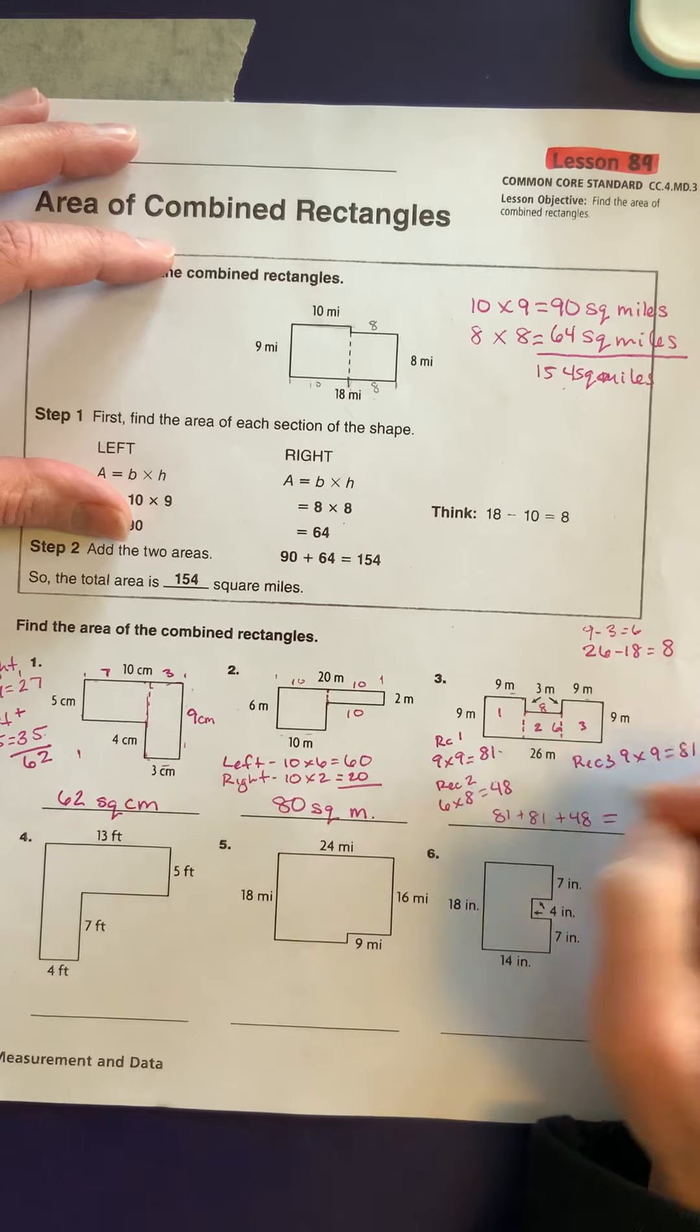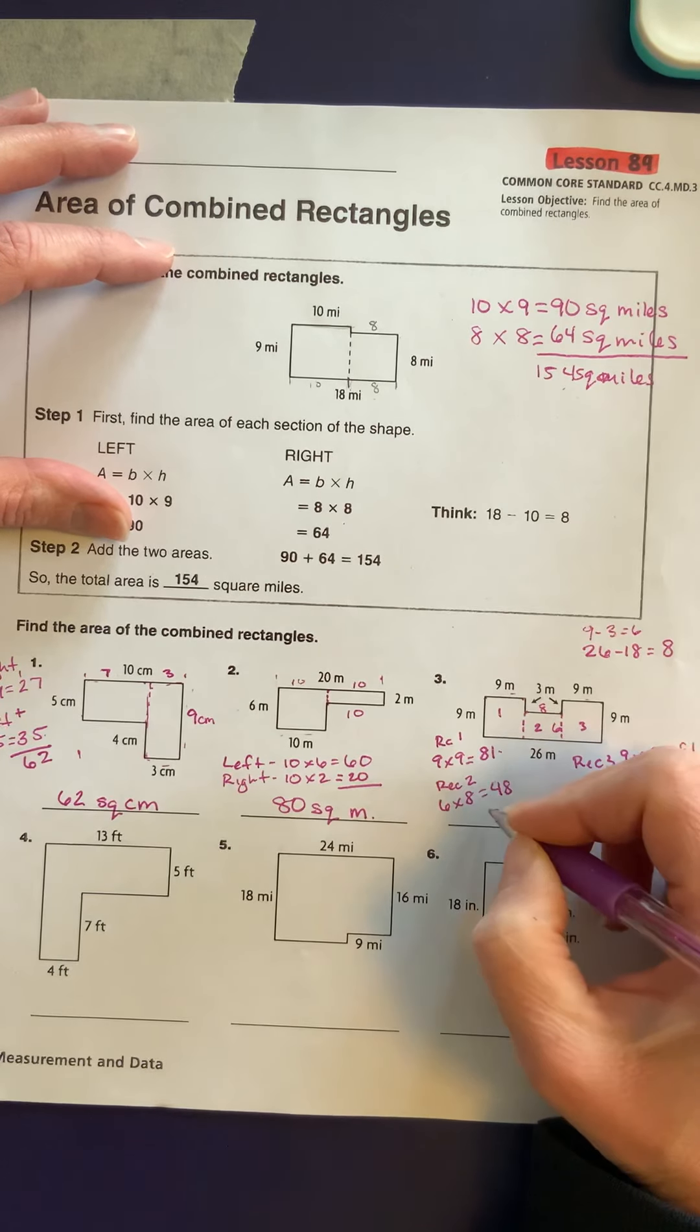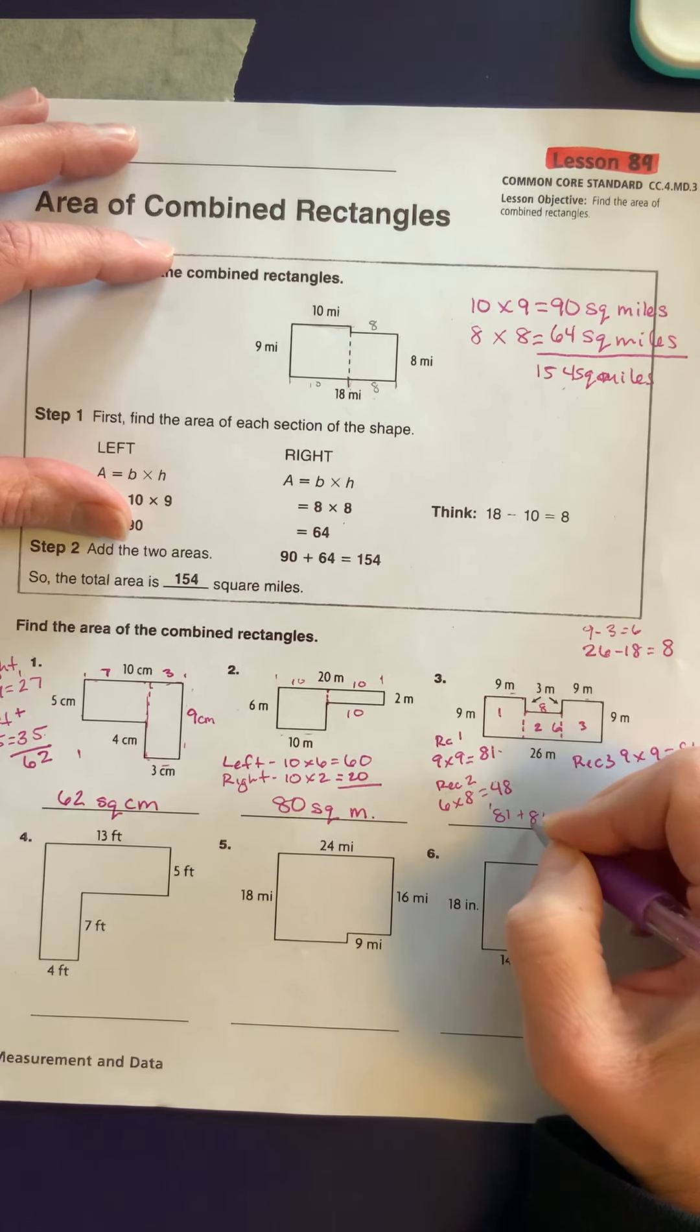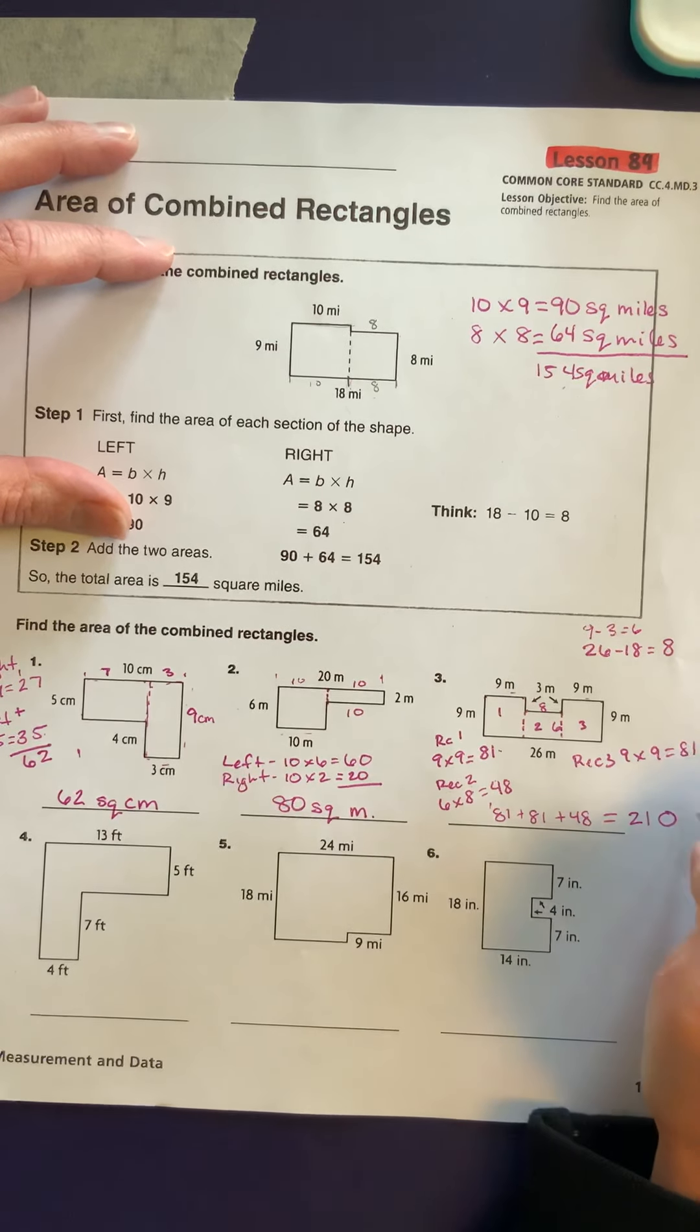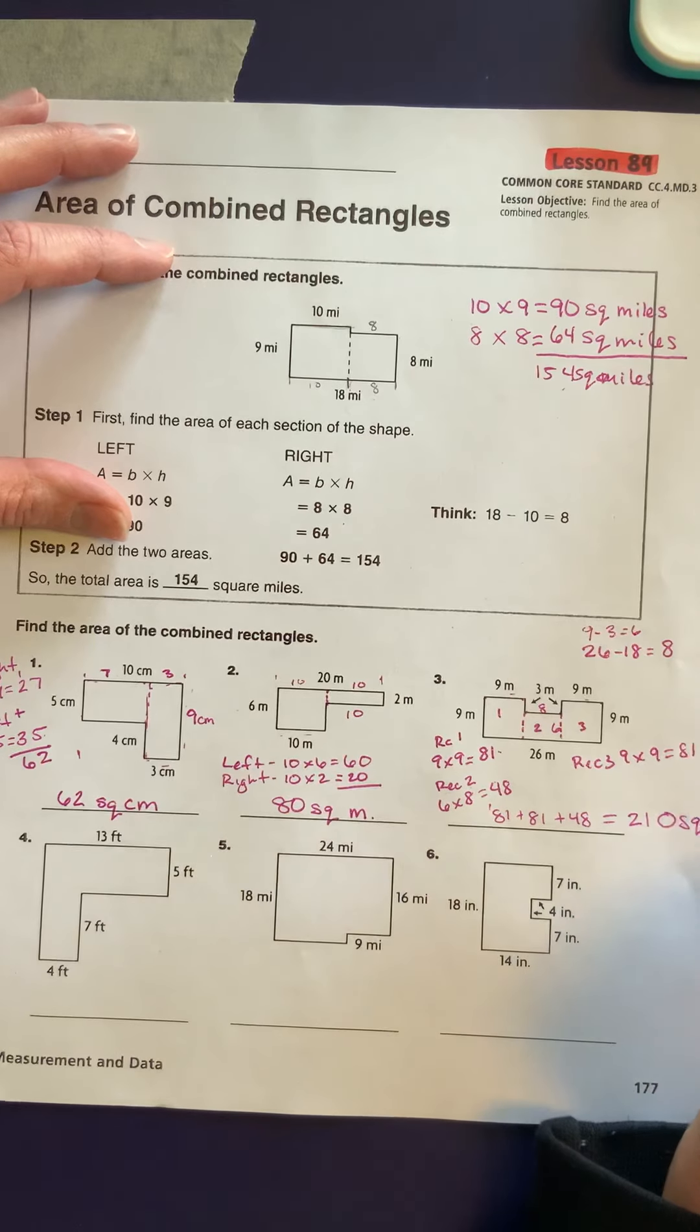8 plus 9, 10. Carry the 1. 4 plus 8 is 12. Plus 8 is 20. 210 square meters.